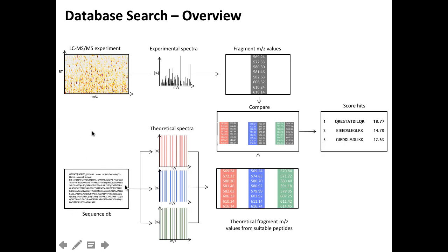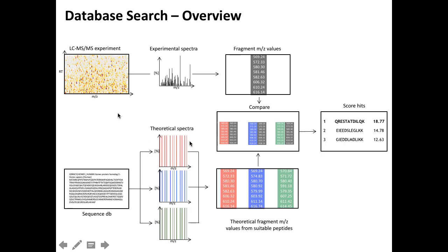The second ingredient is a sequence database — basically the human proteome or a FASTA file containing all the sequences, however you constructed them. For each of these sequences, we can compute or predict a theoretical spectrum. We pretend that we fragment this peptide at every position and draw lines accordingly. Note again, there's no intensity attached right now — it's just the M/Z values of these peaks.